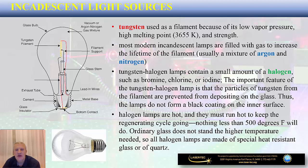Halogen lamps are hot, and in general all incandescent light sources are hot. There are multiple reasons for this, among which the most important is the need to keep the regenerating cycle going, because nothing less than 500 degrees Fahrenheit will sustain this regeneration. Ordinary glass doesn't withstand the high temperature needed for this regenerating cycle, and for that reason all halogen lamps are made of special heat-resistant glass or quartz.